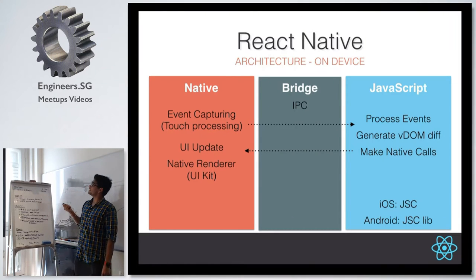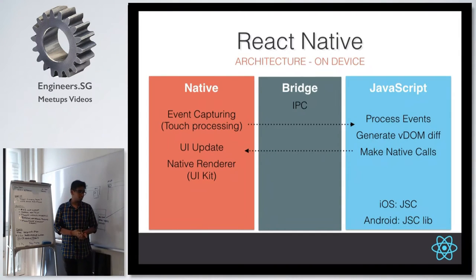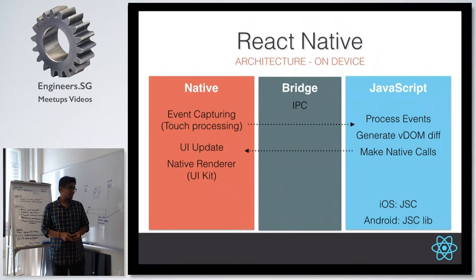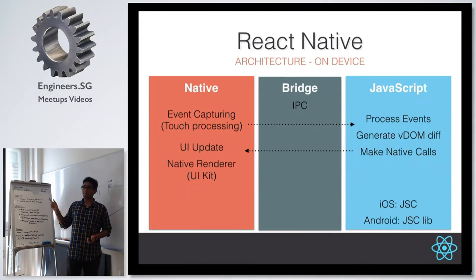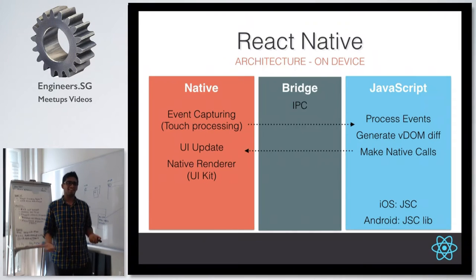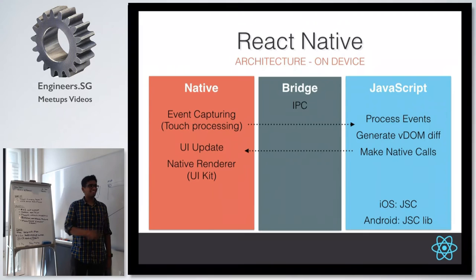An interesting detail: on iOS, React Native uses the JavaScript engine already on your device — the one Safari uses. On Android, the JavaScript engine is actually bundled with your app as a library. This means the minimum size of an Android project is somewhere between 3.5 MB to 5 MB because this additional JavaScript library is packaged with your code each time. Since different Android devices have different browsers — some have Chrome, some have something else — they chose to bundle a standard JavaScript engine.